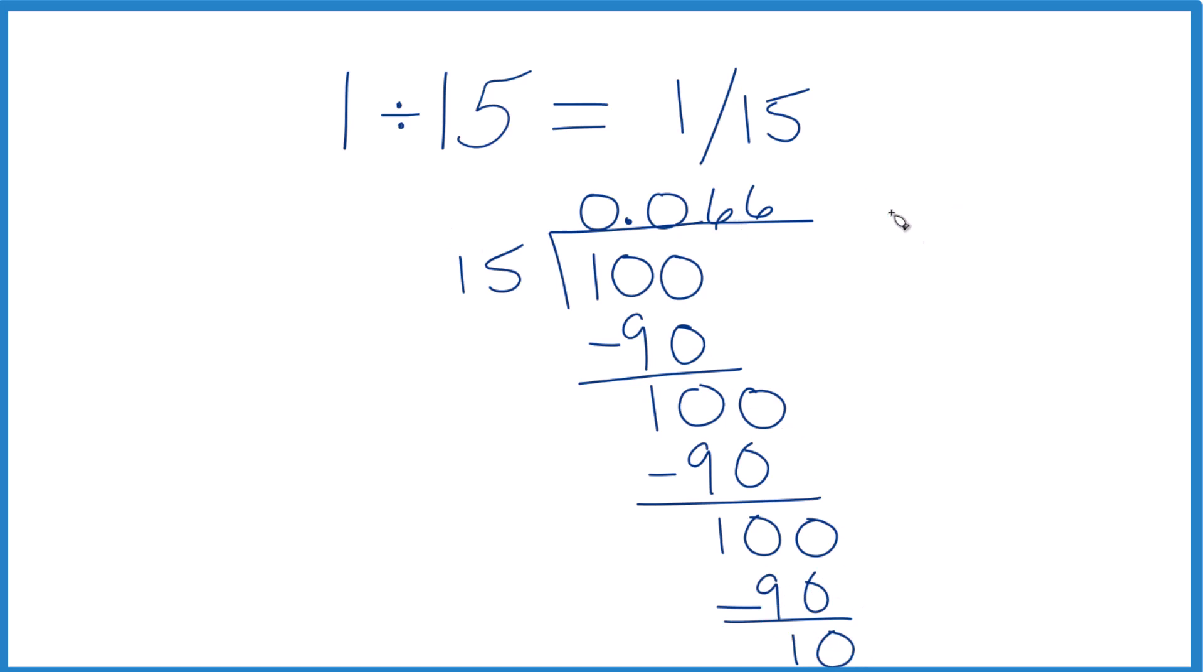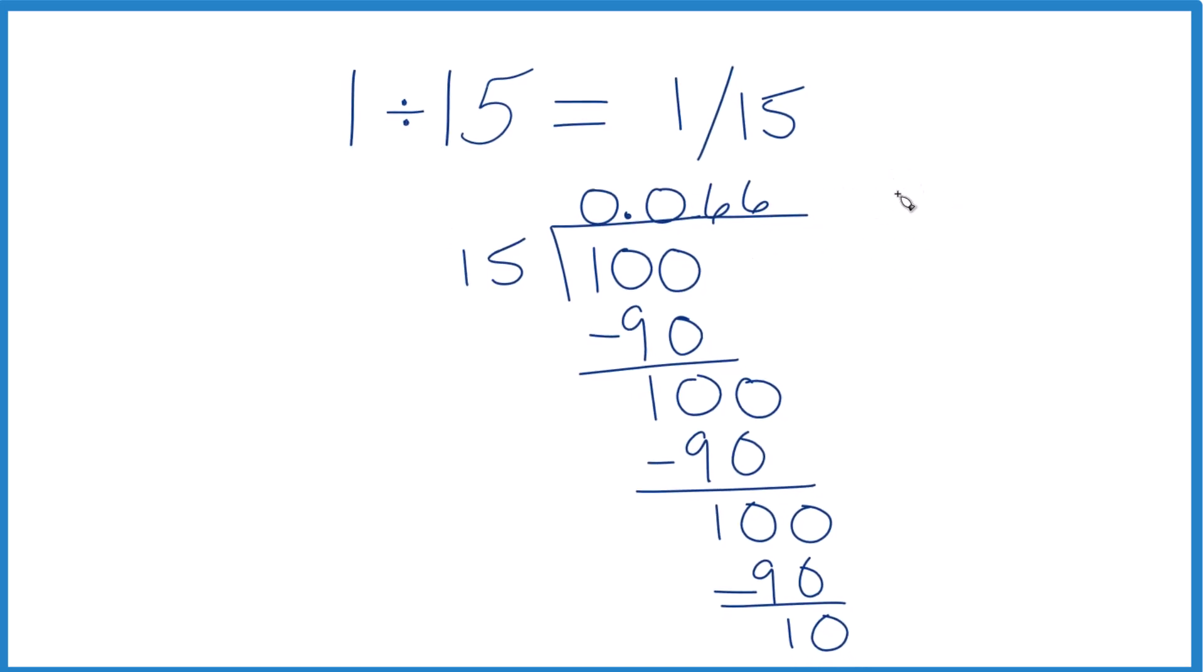We're going to just keep getting 6 here as we do this. So probably the best thing to do is just to write this as 1 divided by 15 equals 0.06 with the 6 repeating. That's more accurate than just writing 6 out for quite a while. Also a lot easier.